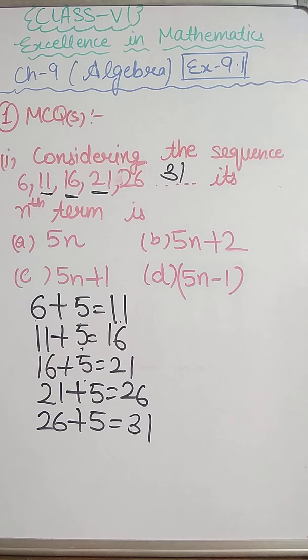Option A is 5n. Option B is 5n plus 2. Option C is 5n plus 1. Option D is 5n minus 1.